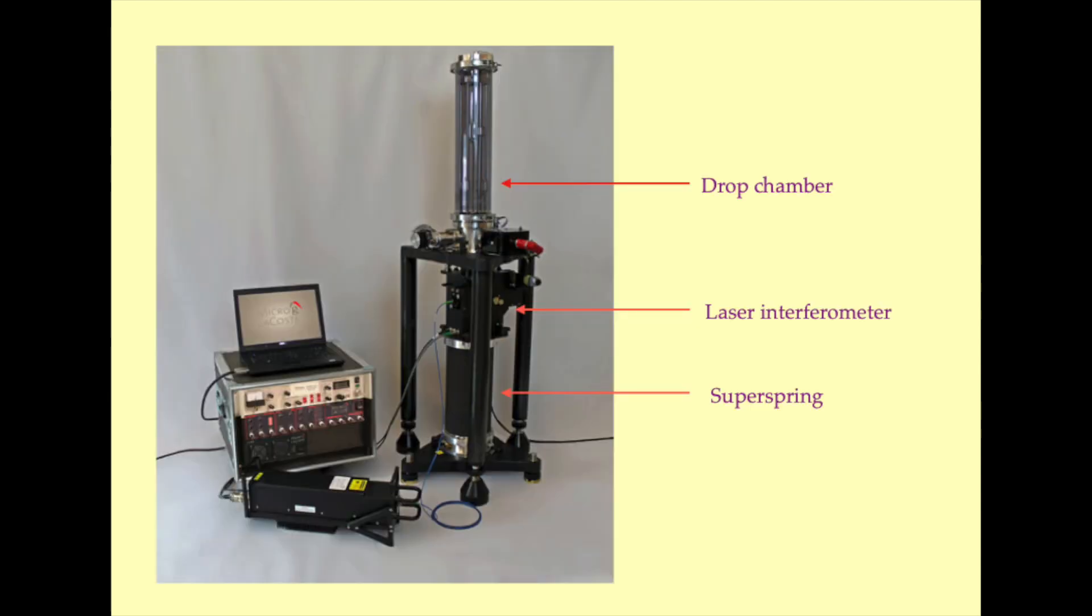Here we see an FG-5 gravimeter that has been set up and is ready to operate. On the top of the unit we can see the shiny metal cylinder that encases the drop chamber, beneath that the base that houses the laser interferometer and the superspring. To the left of the unit is the control mechanism. This is used to control conditions within the gravimeter, operate the gravimeter, and calibrate the various subsystems. It also records the observations made using the gravimeter.